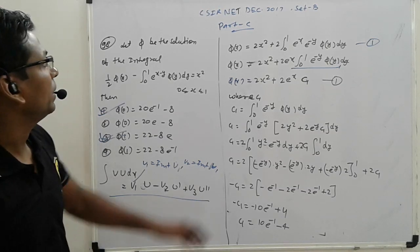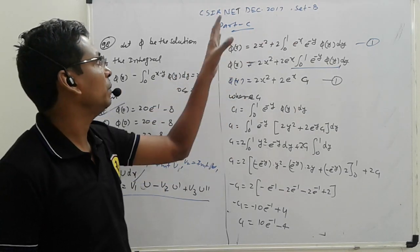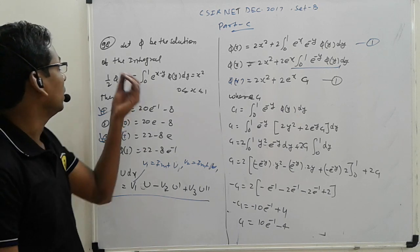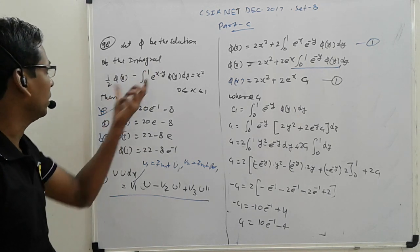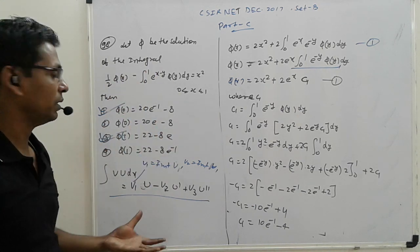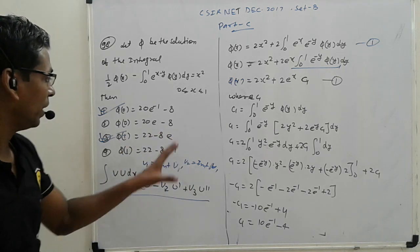Welcome friends. CSIR NET December 2017 Set B Part C questions. Let 5 be the solution of this integral given. So what is the answer? Answer find out karna hai.